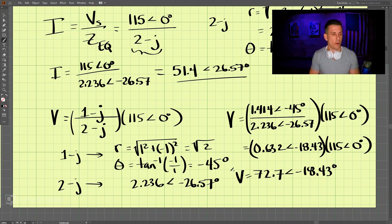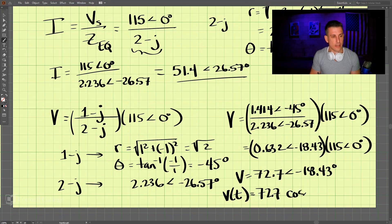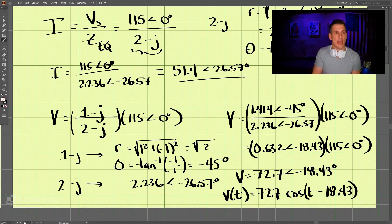So we can write the final time-domain voltage as v(t) = 72.7 cosine of (omega·t minus 18.43°), where omega equals 1, and that is the solution to our problem.